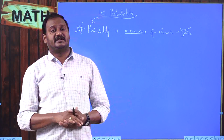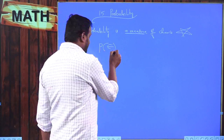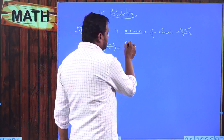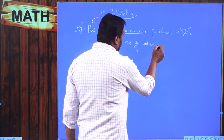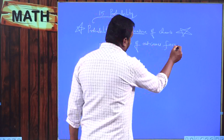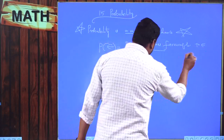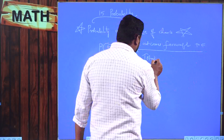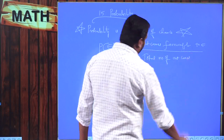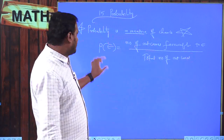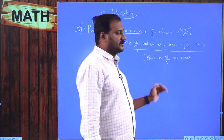We already have a formula for probability of occurring an event. Probability of E is equal to number of outcomes favorable to event E divided by total number of outcomes. This is the classical definition of probability.